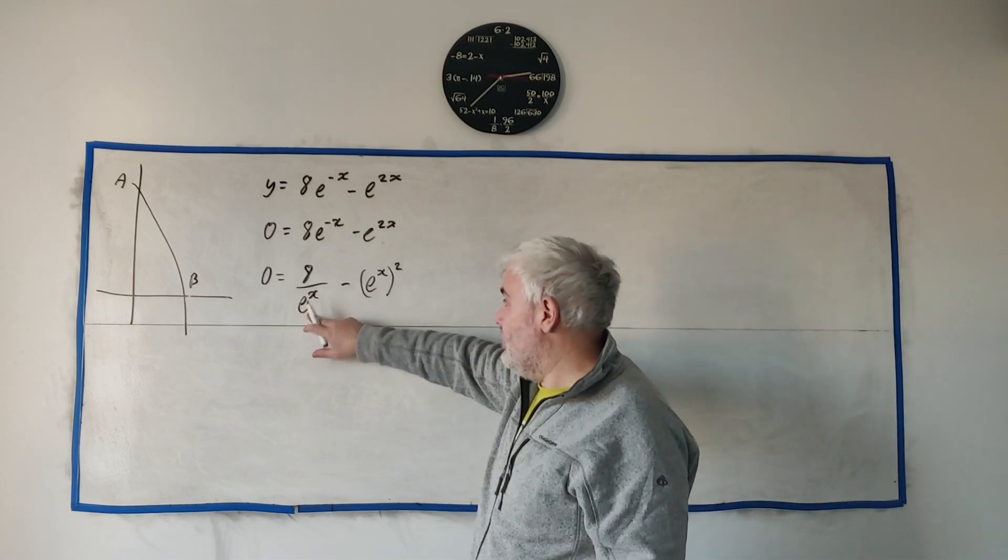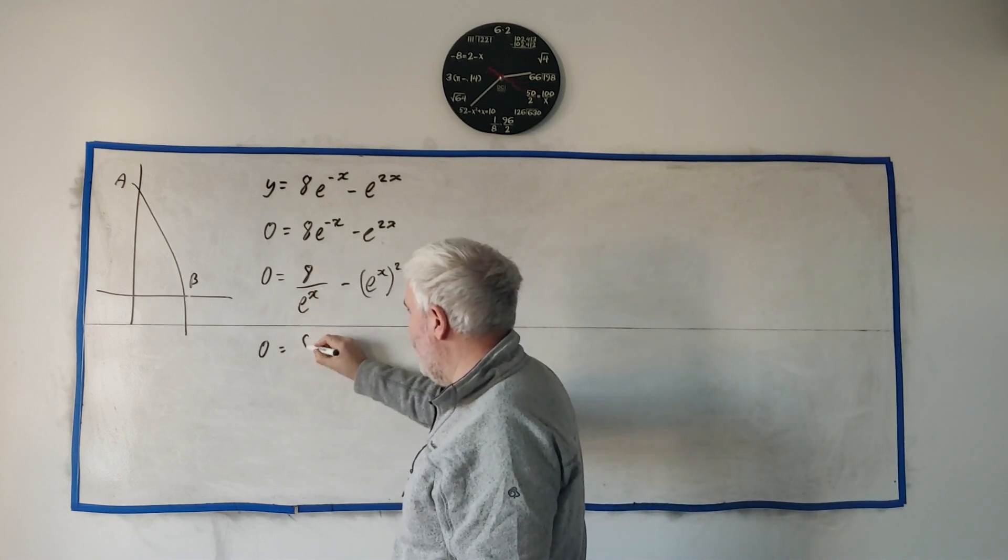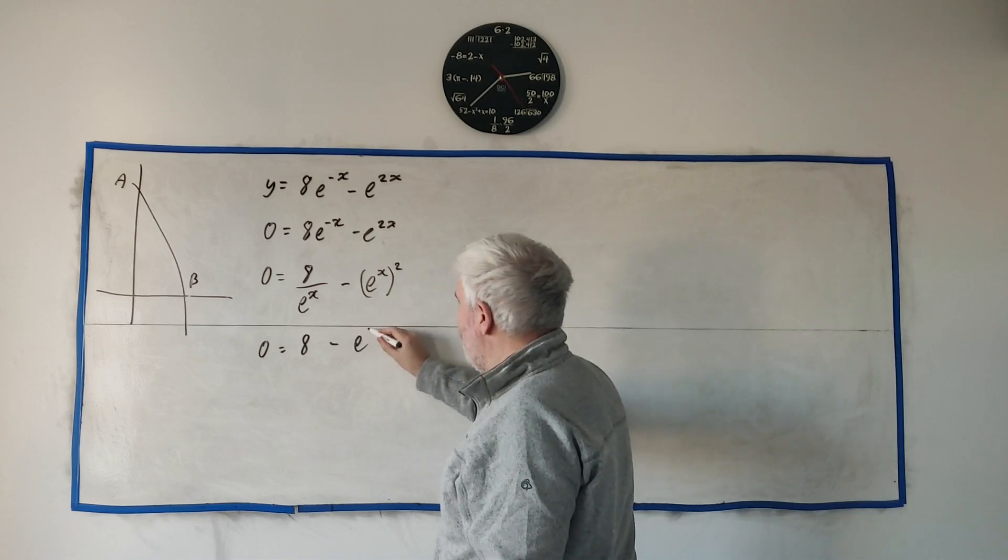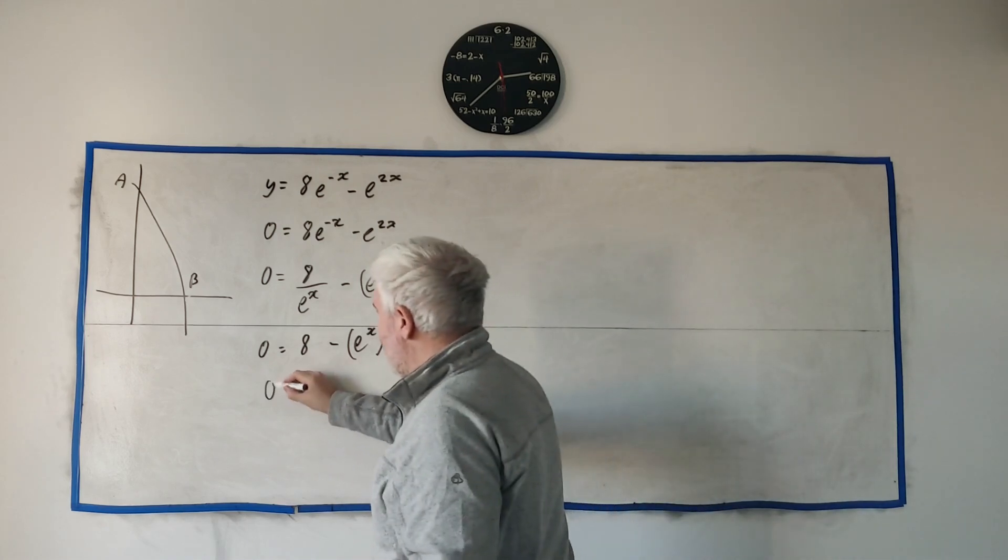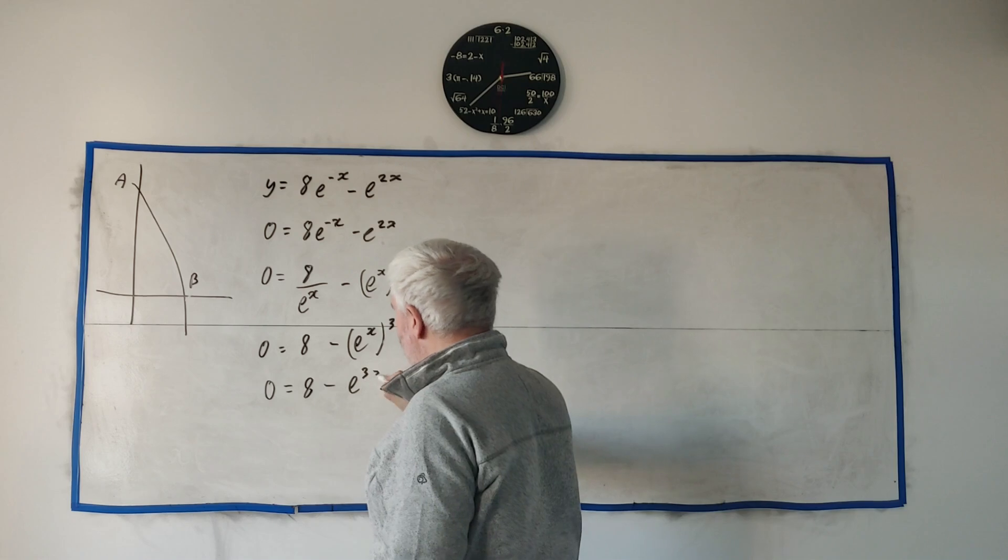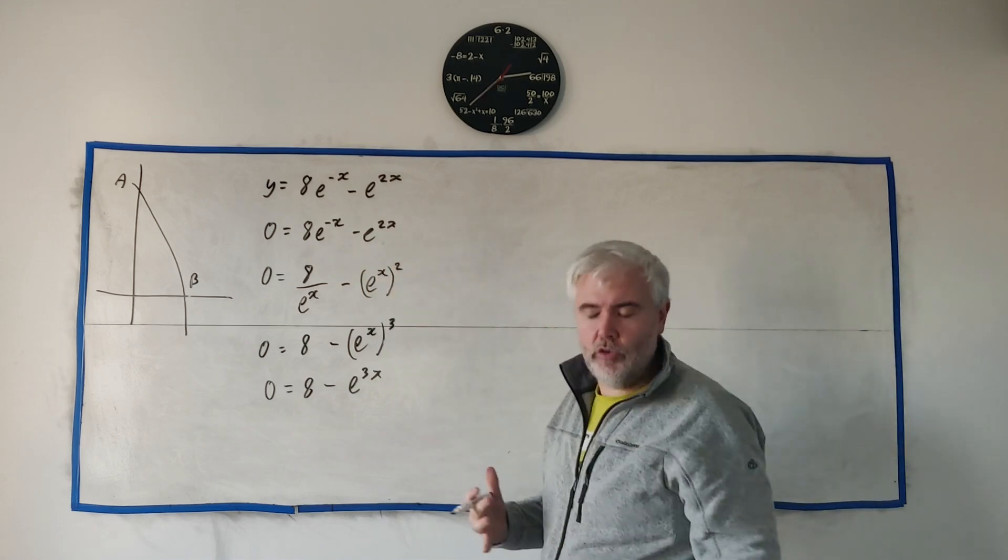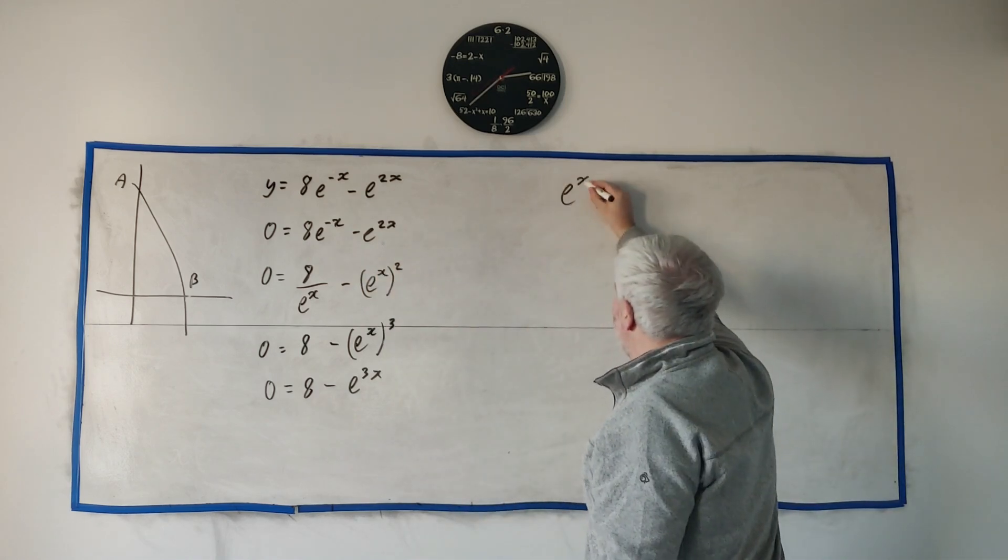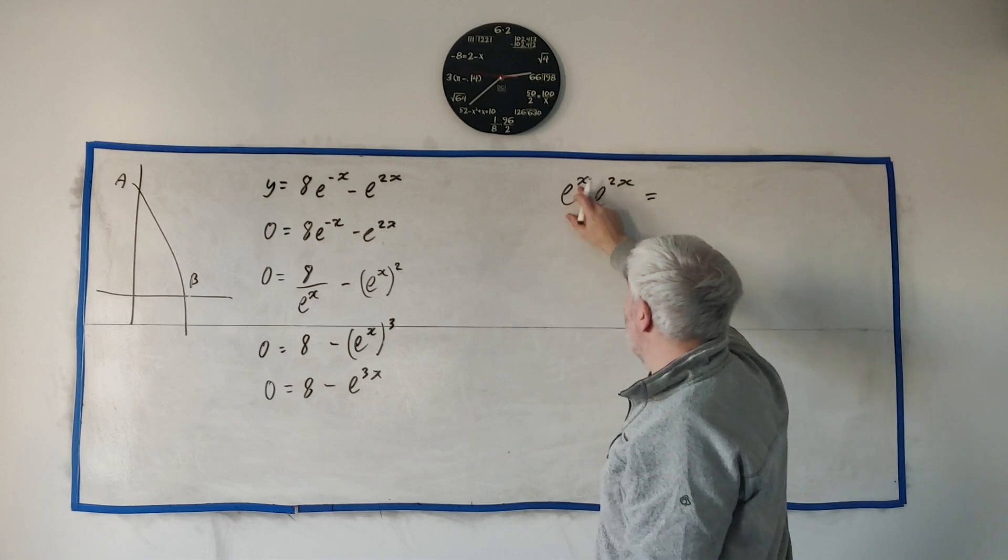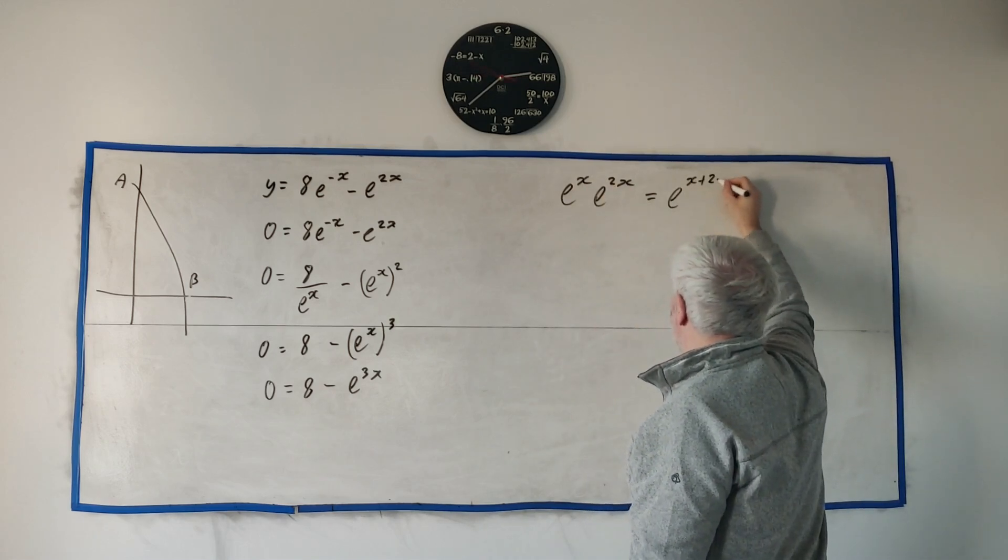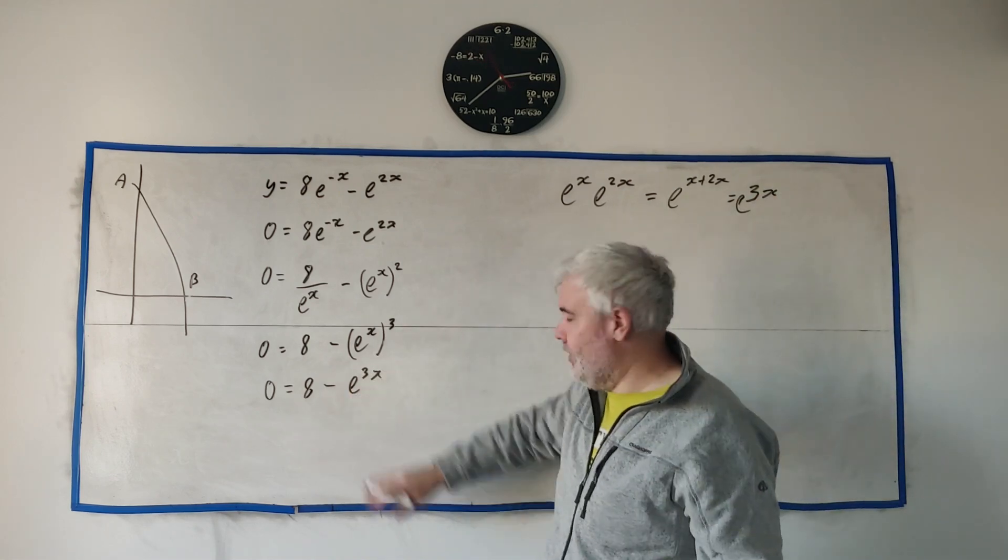Let's multiply everything by this e to the power of x to get rid of it. Zero times it is still zero. Eight over it cancels to get just eight. And this guy becomes e to the power of x cubed. You could just leave it as minus e to the power of 3x. You can think of it as e to the x multiplying by e to the 2x. These just add together, becoming e to the 3x. Whatever way you think of it, hopefully you got to this point.